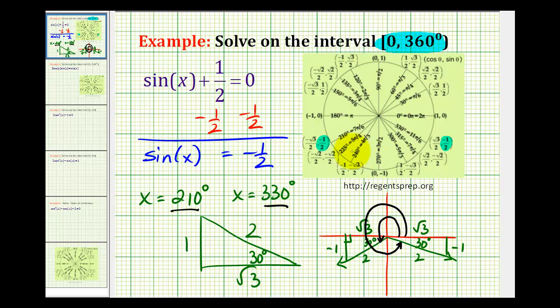The last thing I want to mention on this example would be that sometimes you're asked to determine all of the solutions to a given trig equation. And we can do that by writing an expression to represent all of the angles, meaning any angle that's coterminal with 210 degrees would also be a solution to this equation.